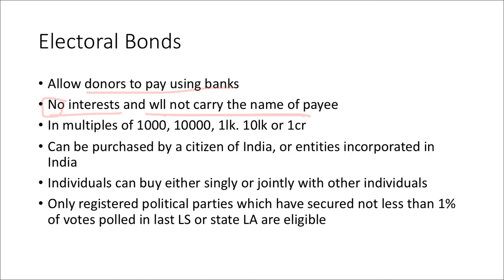The denomination of the bond can be multiples of one thousand, ten thousand, one lakh, ten lakh, or one crore. As per the provisions of the scheme, electoral bonds may be purchased by a citizen of India or entities incorporated in India — either individually or jointly with other individuals.